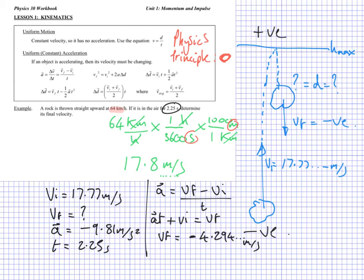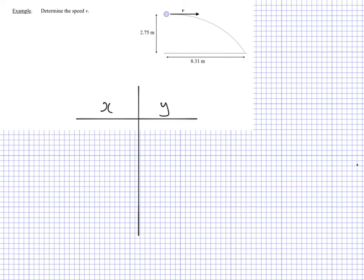The last thing to do is just to check significant digits. Looking at my question, my sig digs are 64, so two significant digits there, three significant digits there. I need to use the smallest one in my question, because that's my sig dig rule. So this means I have to round this to two. The final velocity of this rock is 4.3 meters per second downwards.